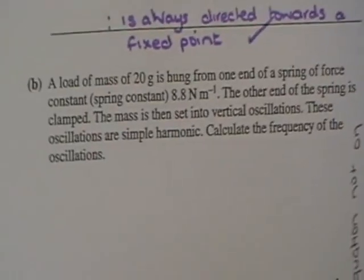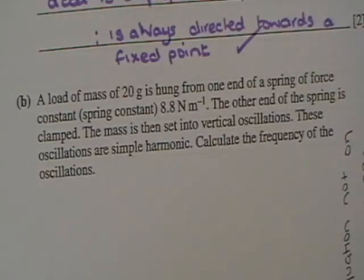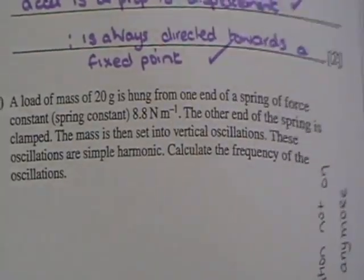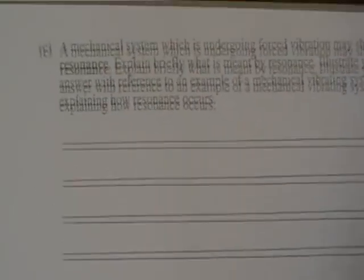Now part B wants you to use the T equals 2π squared m over k equation, which isn't in the syllabus anymore, so I'm not going to give you an answer to that. Part C, however, you can do.